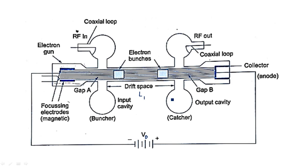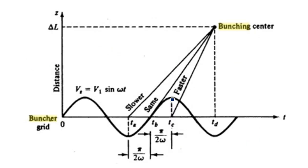If the distance in the drift space at which bunching occurs from the input grid is noted as L1, this diagram represents the change in velocity of electrons at different positions. 'Slower' means the late electron, 'same' means the reference electron, and 'faster' means the early electron. The early electron travels with less velocity compared to the standard, and the late electron travels with the highest velocity, greater than v0.